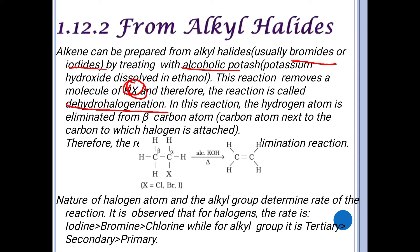In dehydrohalogenation, we remove one hydrogen and one halogen to form a hydrogen halide such as HCl or HBr. The hydrogen atom is eliminated from the beta carbon atom. The carbon to which the halogen (fluorine, chlorine, bromine, or iodine) is attached is the alpha carbon; the carbon next to the alpha carbon is the beta carbon. Hydrogen is removed from the beta carbon and halogen from the alpha carbon, shifting the bond to form the double bond.